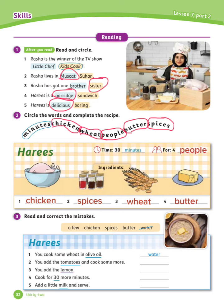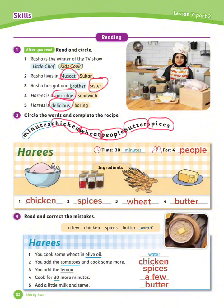Exercise number 3: Read and correct the mistakes. Use the words in the box above to help you. Number 1 is done for you: You make some wheat in water. Number 2: You add the chicken and cook some more. Number 3: You add the spices. Number 4: Cook for a few more minutes. Number 5: Add a little butter and serve.